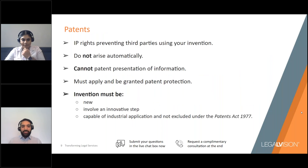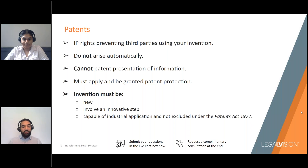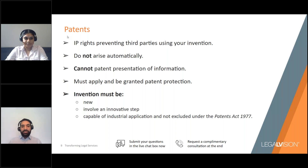Moving on to patents. Patents are an intellectual property right that grant inventors certain rights to prevent third parties from using their invention. Patent protection does not arise automatically — you cannot patent an idea, the way information is presented, software with a non-technical purpose, or a way of doing business. To have patent protection, your invention must be new, it must involve an inventive step, it must be capable of industrial application, and must not be excluded from protection under the Patents Act 1977.